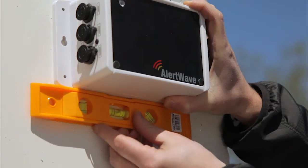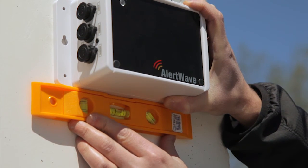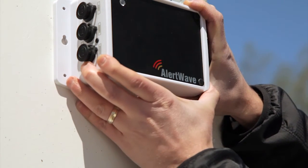Hold the level under the VNS2200 unit to make sure it is straight and mark the location of the two mounting holes inside the unit eyelets.